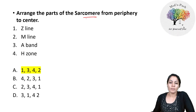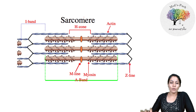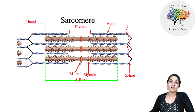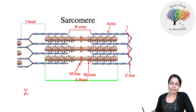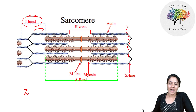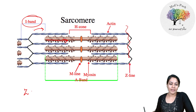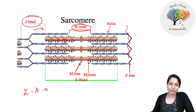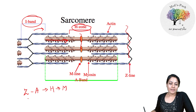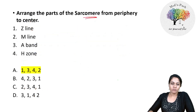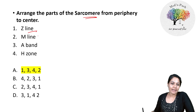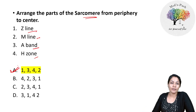Arrange the parts of the sarcomere from periphery to center. At the periphery are the Z lines. Moving inward, there is the I band (not in the options), then the A band, followed by the H zone, and finally the M line at the center. The order is: Z line → A band → H zone → M line, giving the answer sequence 1, 3, 4, 2.